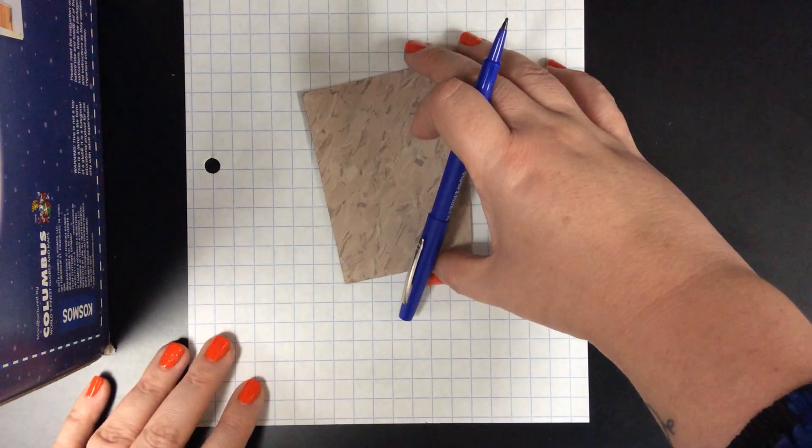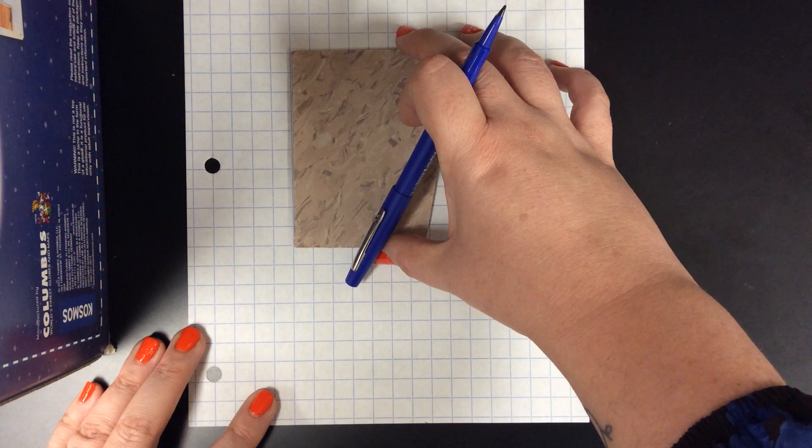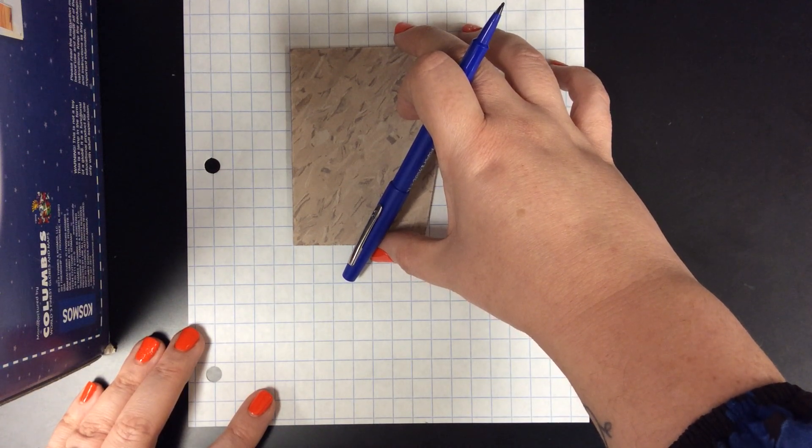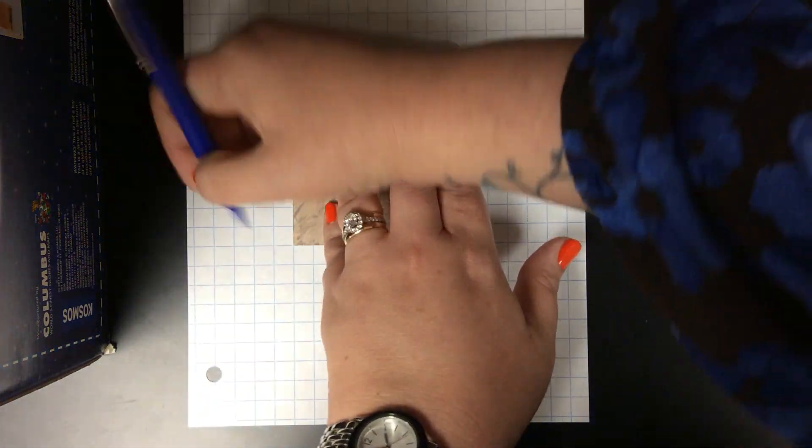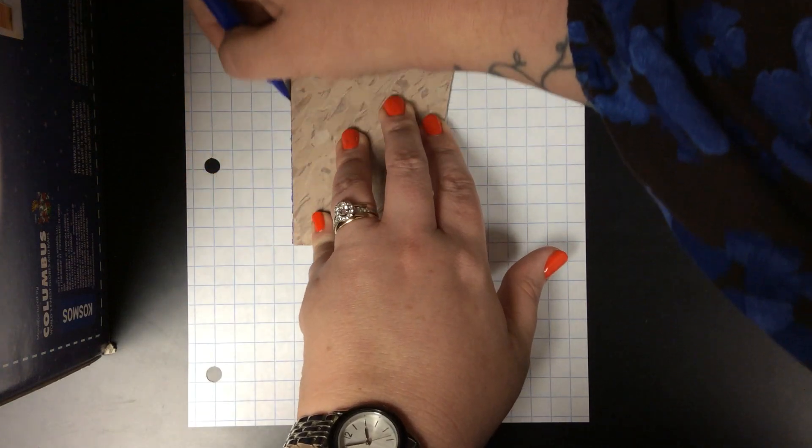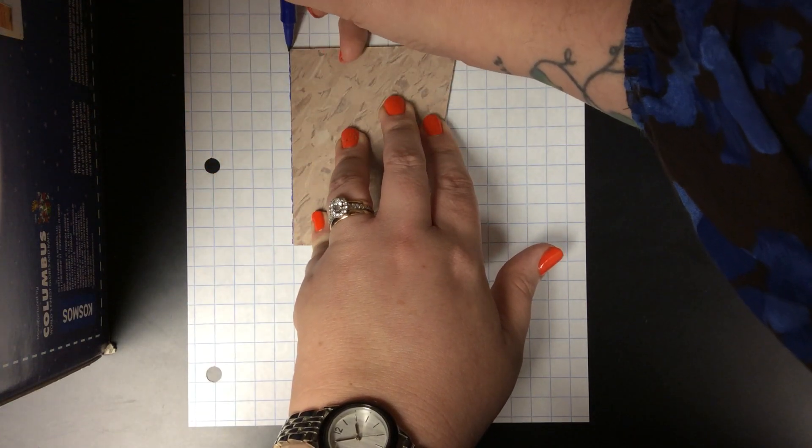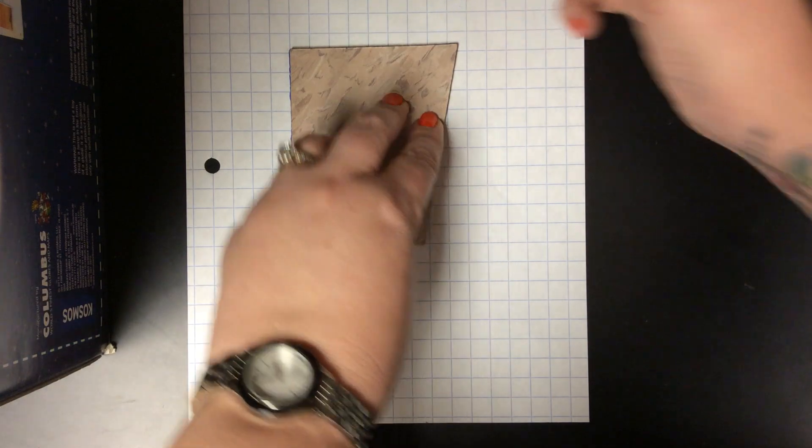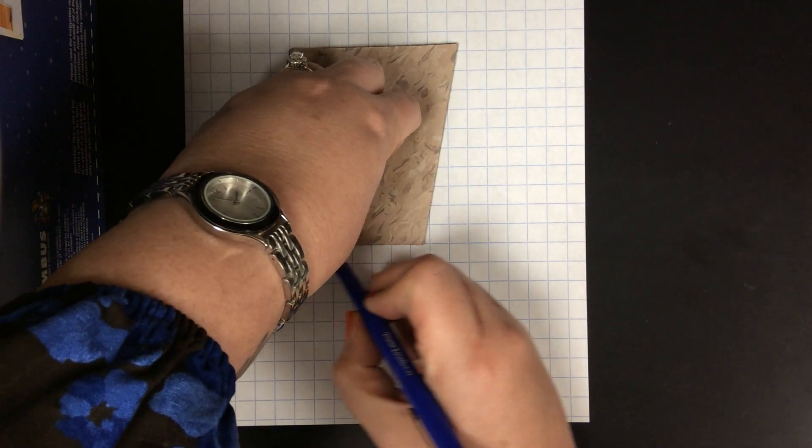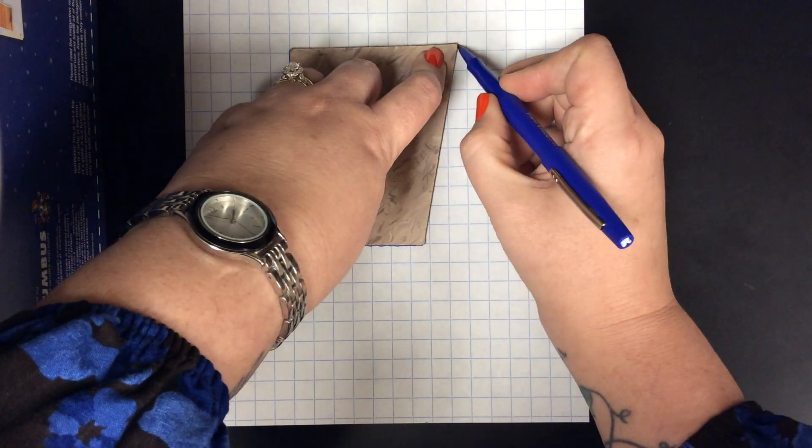Now the very first thing that you would do is to take your piece of tile and you're going to just trace it on the graph paper. The best way to do this is to find the straightest side and line it up on the lines of the graph paper.